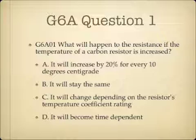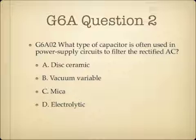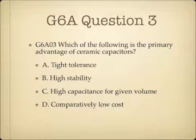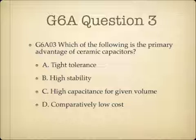Question 1: What will happen to the resistance if the temperature of a carbon resistor is increased? A. It will increase by 20% for every 10 degrees centigrade. B. It will stay the same. C. It will change depending on the resistor's temperature coefficient rating. Or D. It will become time dependent. Question 2: What type of capacitor is often used in power supply circuits to filter the rectified AC? A. Disc ceramic. B. Vacuum variable. C. Mica. Or D. Electrolytic. Question 3: Which of the following is the primary advantage of ceramic capacitors? A. Tight tolerance. B. High stability. C. High capacitance for given volume. Or D. Comparatively low cost.